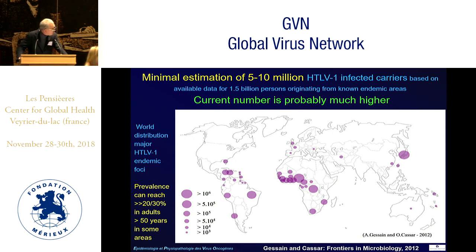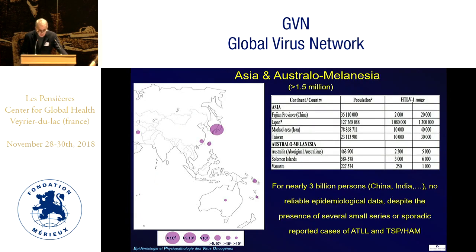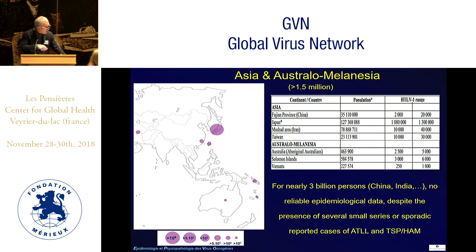You can see the distribution with the main areas: Japan with more than 1 million infected persons; Central Africa, the western part, with at least 2 to 5 million; Brazil with at least 1 million; and the Caribbean and other places. Prevalence can reach 20–30% or more in adults, especially those older than 50 years. In Asia and Australomelanesia, at least 1.5 million are infected, but for nearly 3 billion persons in countries like China and India, there is no really good data.